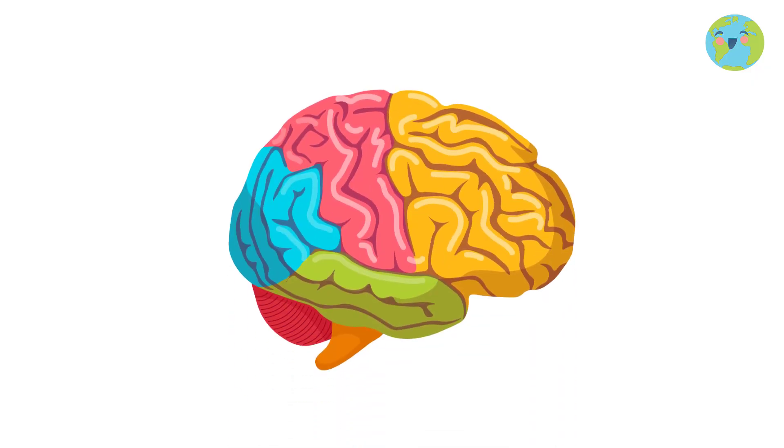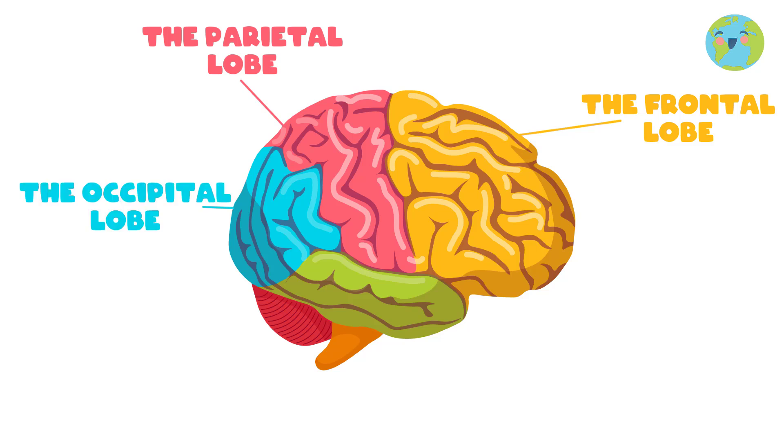In turn, each hemisphere is made up of four brain lobes: the frontal lobe, the parietal lobe, the occipital lobe, and the temporal lobe. And each one takes care of different functions of the brain.